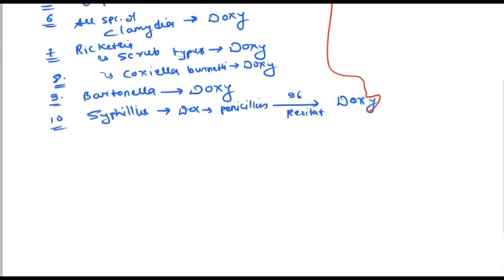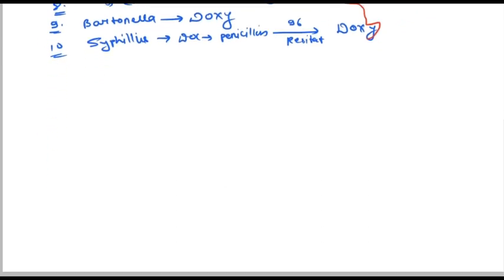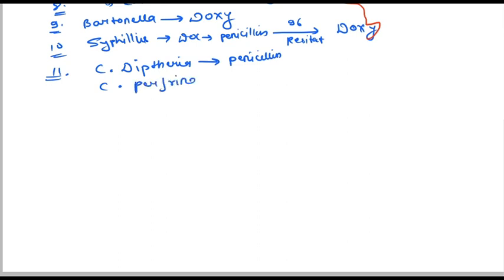The 11th bacteria is Corynebacterium diphtheriae — we prescribe penicillin. Corynebacterium perfringens also gets penicillin. Next, Clostridium tetani — we give the same antibiotic: penicillin.